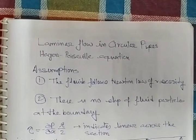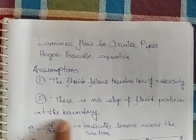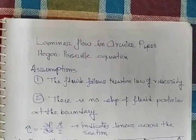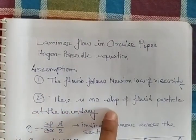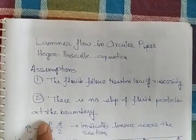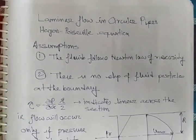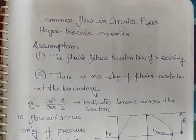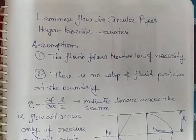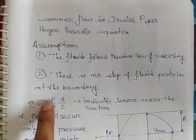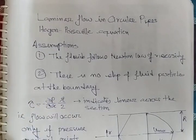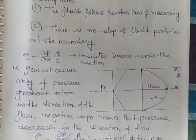It is called Hagen-Poiseuille equation. There are a few assumptions: the fluid flow must follow Newton's law of viscosity, and there is no slip of fluid particles at the boundaries. From the derivation, you will get tau equals pressure gradient r by 2, which indicates linear behavior.